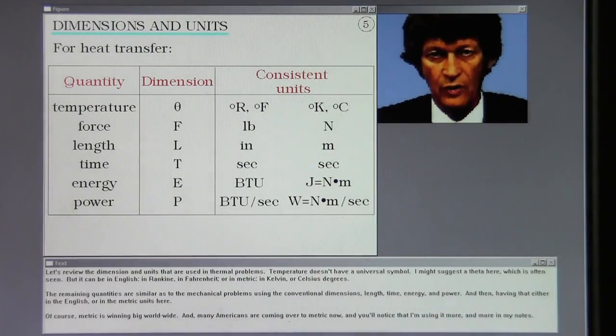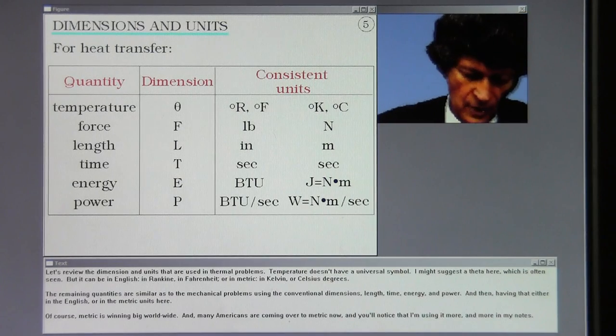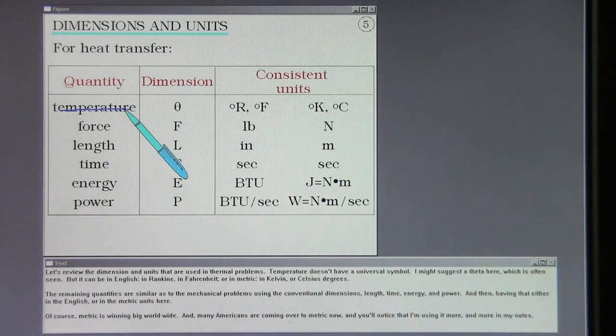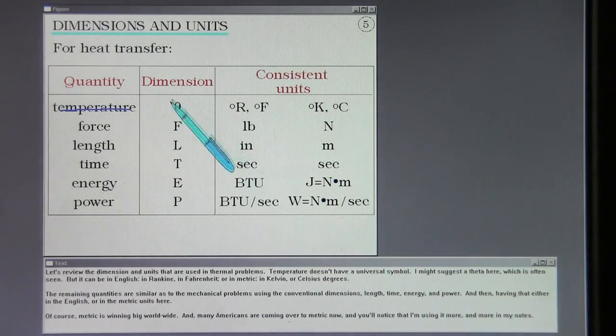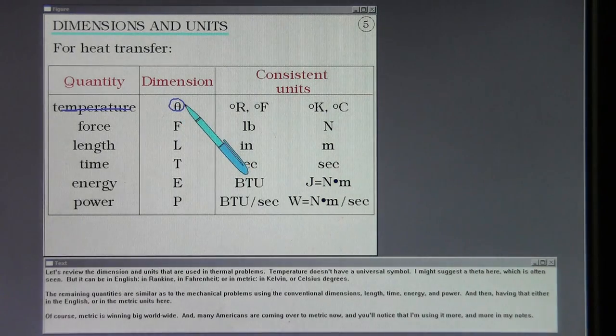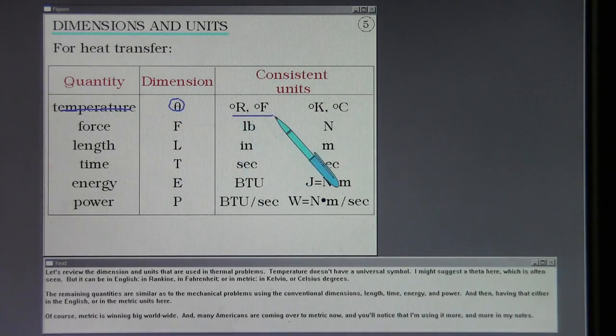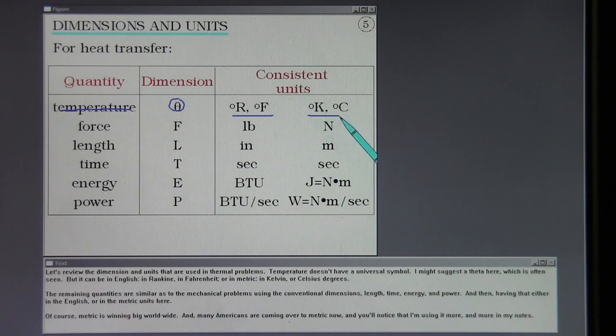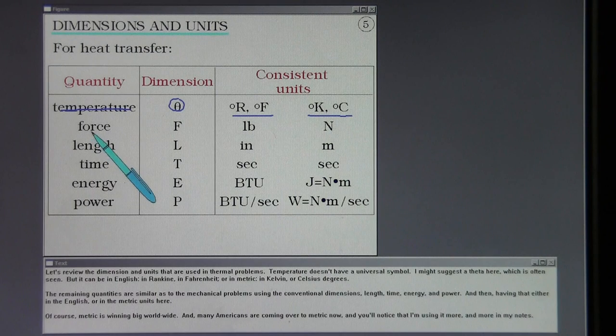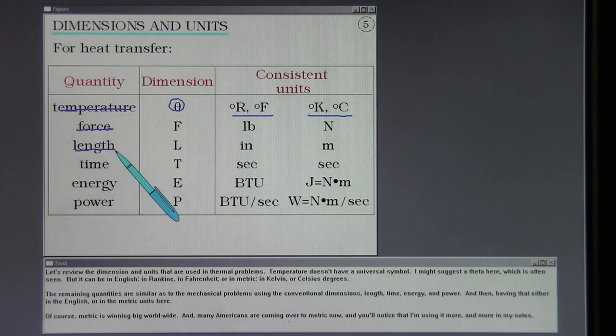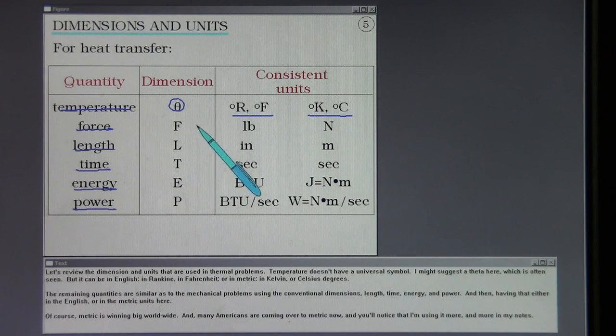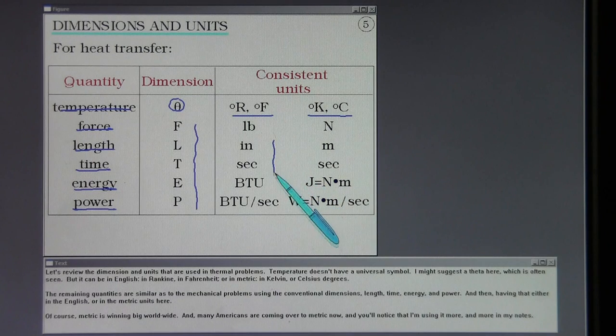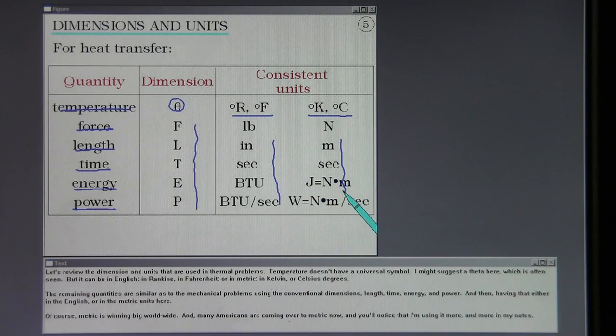Let's review the dimensions and units used in thermal problems. Temperature doesn't have a universal symbol - I might suggest a theta here, which is often seen. It can be in English, in Rankine or Fahrenheit, or in metric in Kelvin or Celsius degrees. The remaining quantities are similar to mechanical problems, using the conventional dimensions: length, time, energy, and power, having that either in English or metric units here.